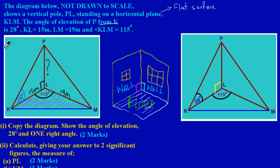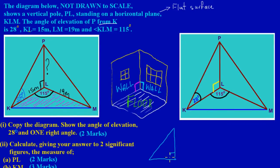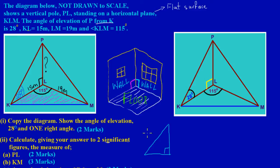So basically we could just take out that triangle. This is my triangle — a right angle triangle. I'm going to put in the right angle located at point L. Then I would have K here and my P would be up top. This is the distance they are asking us to find, and I've labeled it X.